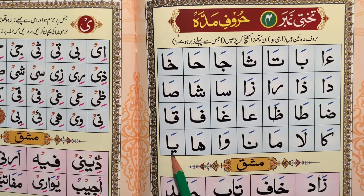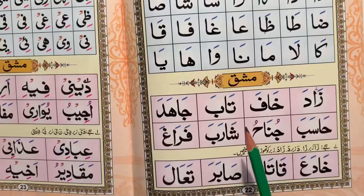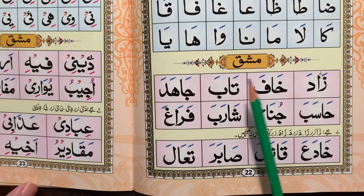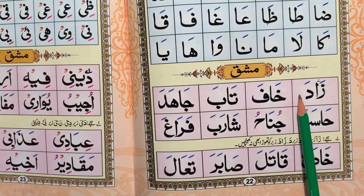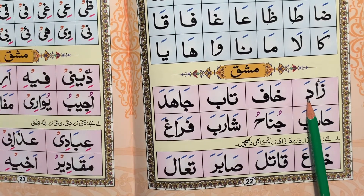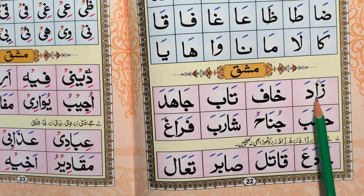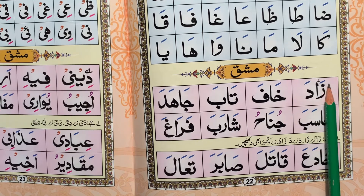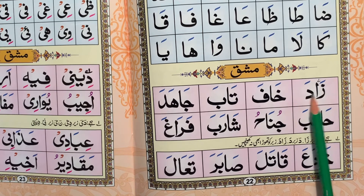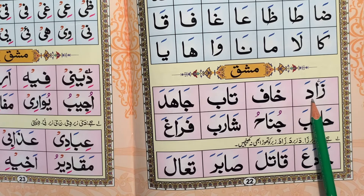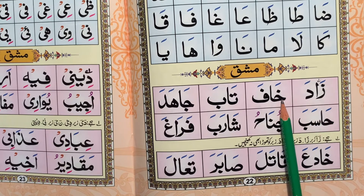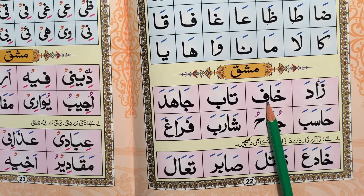Ya Alif Zabar - YA. Now we will read Mashq. Zaada: ZAA Alif Zabar - ZA. ZAA Alif Zabar - ZA. ZAA Alif Zabar - ZA. Zaada, Zaada. Khaaf.